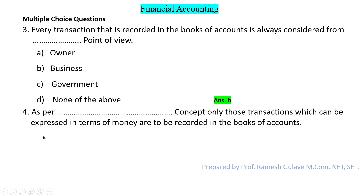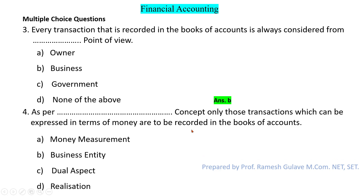The next question says: as per dash concept, only those transactions which can be expressed in terms of money are to be recorded in the books of account. As per the money measurement concept, only monetary transactions are recorded. The money measurement concept says: record only those transactions which have monetary consideration. So option A is the right answer.